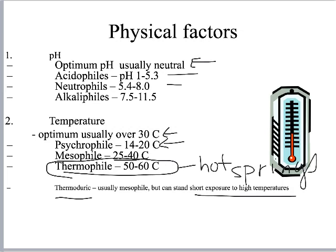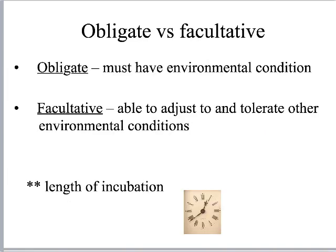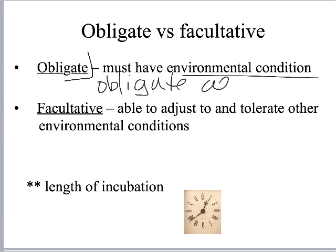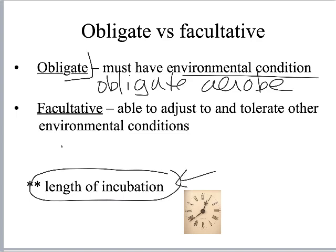Something that is thermoduric grows in the middle temperature range but can still survive if exposed to high temperatures. The big distinction is between obligate and facultative. If something is obligate, it must have that environmental condition — for example, obligate aerobes must have oxygen and are found at the surface of a test tube or lake. Facultative organisms can adjust or tolerate other environmental conditions, so they might be found growing anywhere.